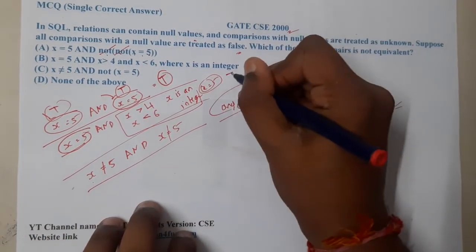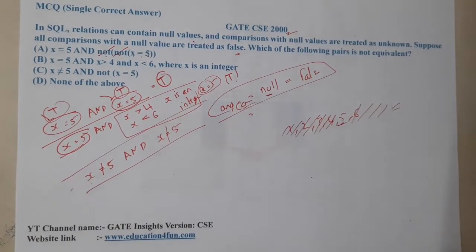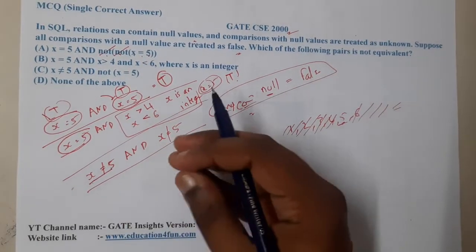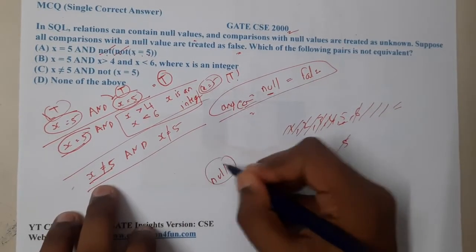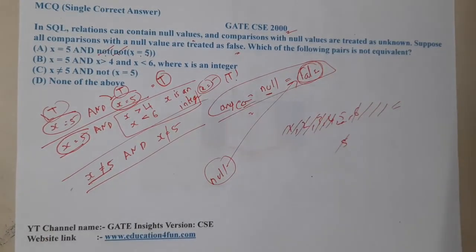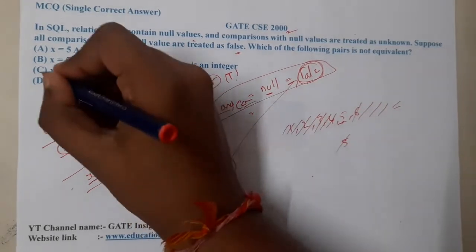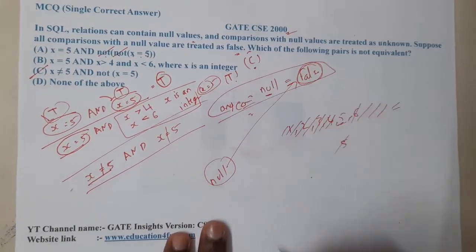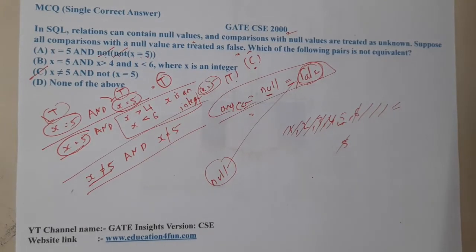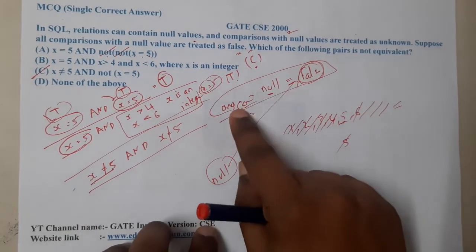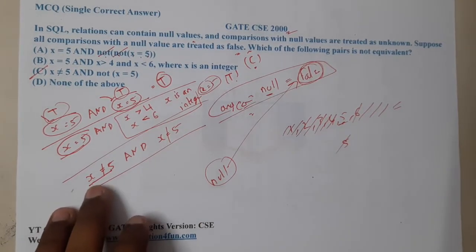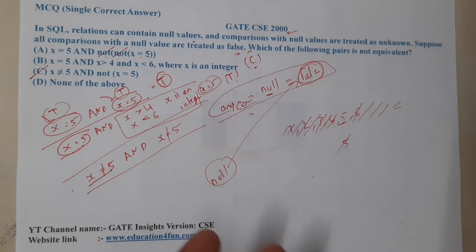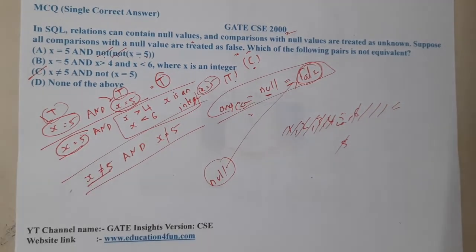When it comes to option C, they are saying x is not equal to 5 — meaning anything other than 5 is possible. So can x be null? If x is null, there is a chance we get false. That reason is enough to say option C is the correct answer, because the value of x could be null, and any operation with null gives false.